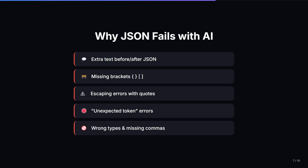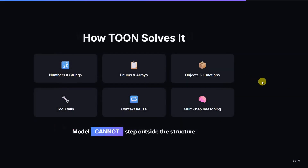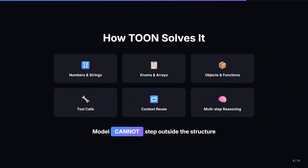So how does TOON solve all these problems? Let me show you. If you see over here, the model cannot step outside the structure — the template, the design which we have created in TOON, the form we have created. Into that form, we have given different types: like we need ID as a number type, we need status as an enum type. So in this way it works. The model cannot step outside the structure. No validation errors. No broken responses.